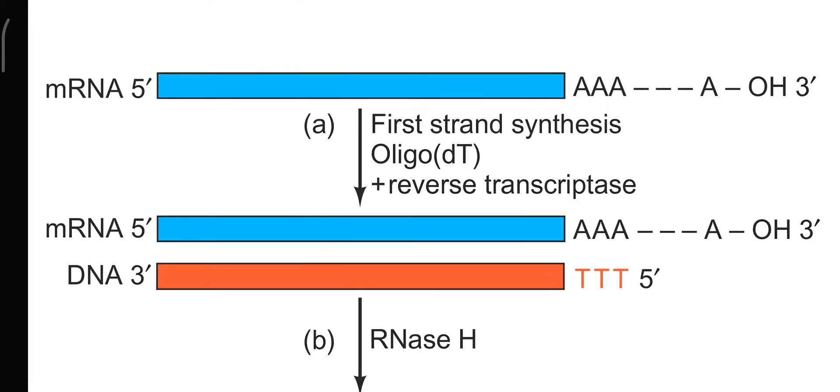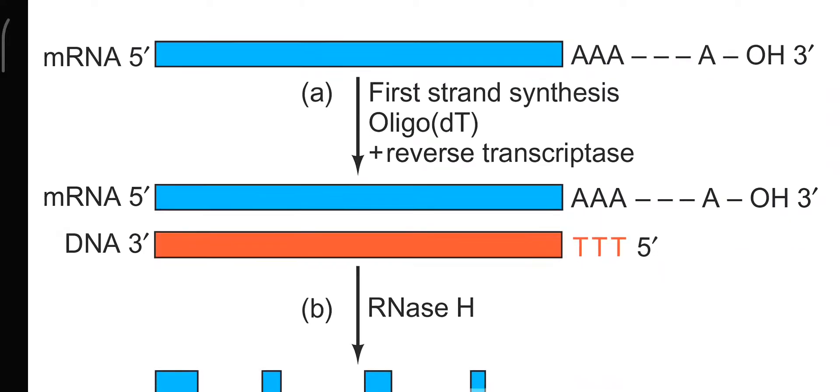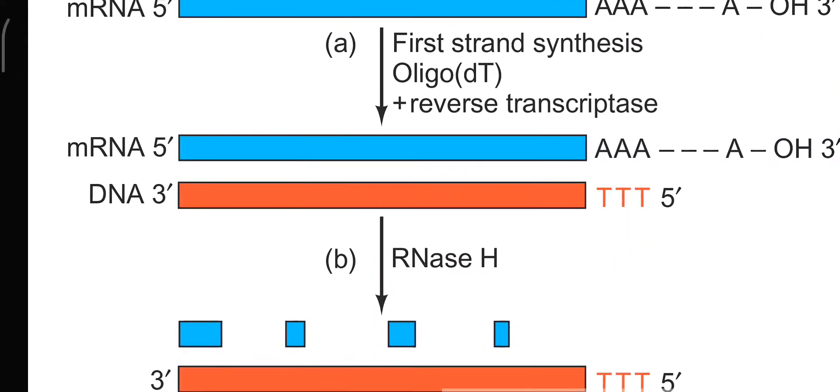Once we attach a poly-T to this 3' terminal, then this reverse transcriptase enzyme will start the formation of DNA by using this mRNA as a complementary strand.